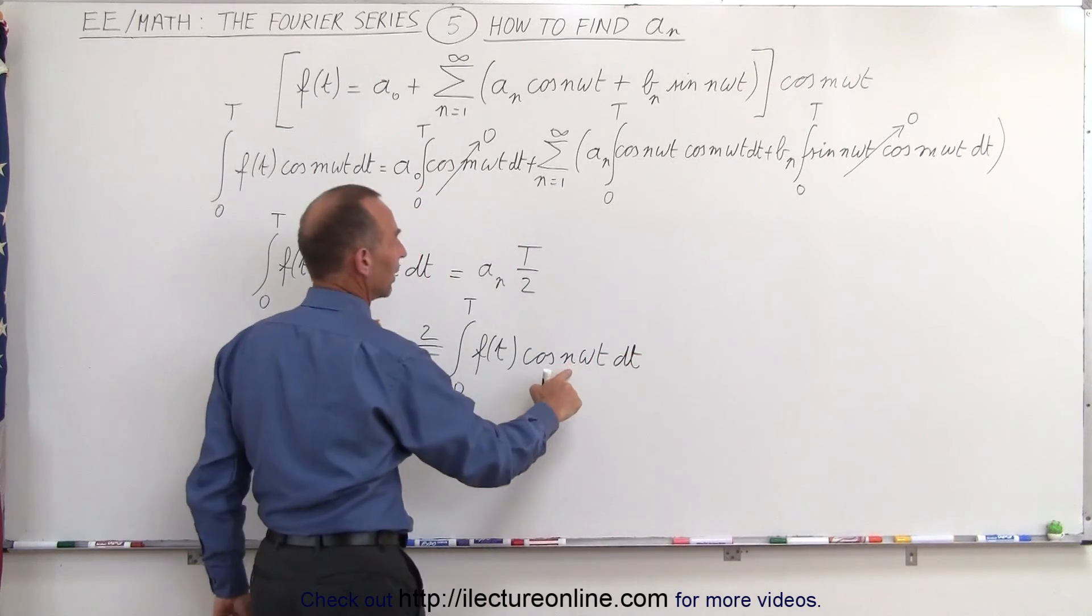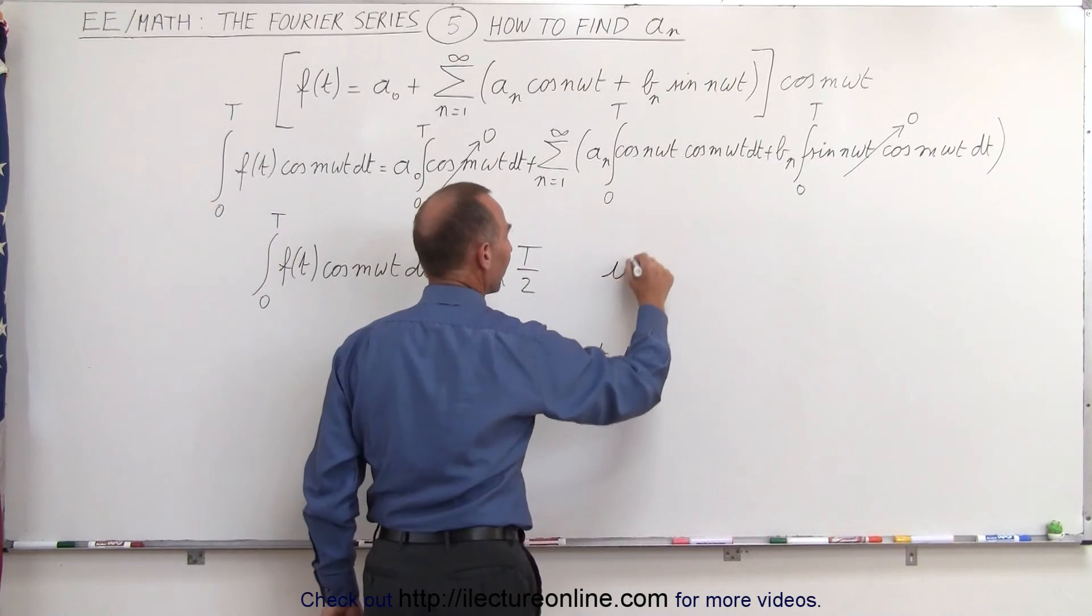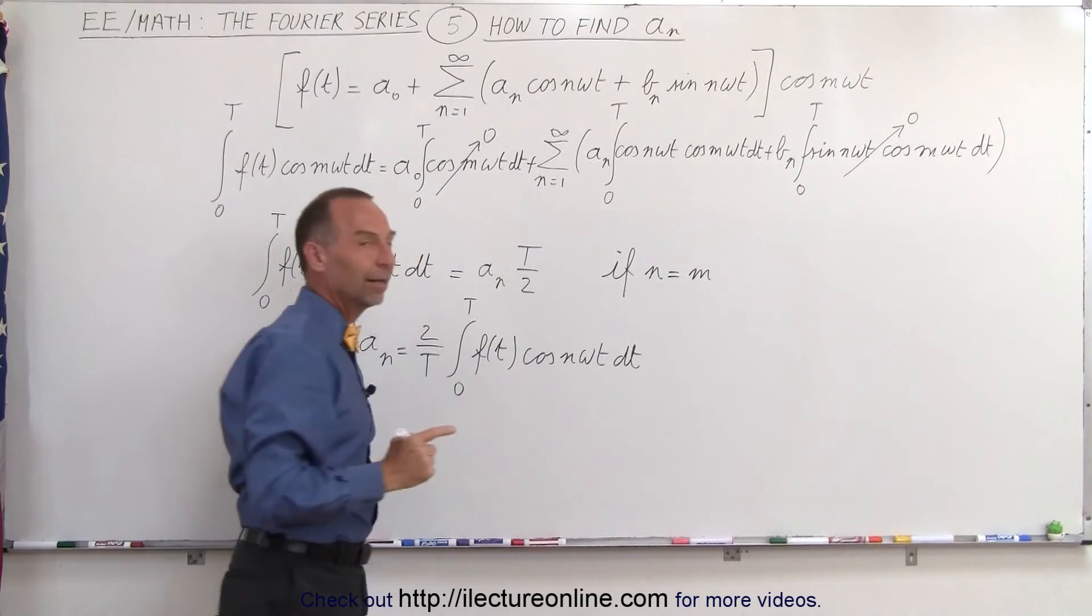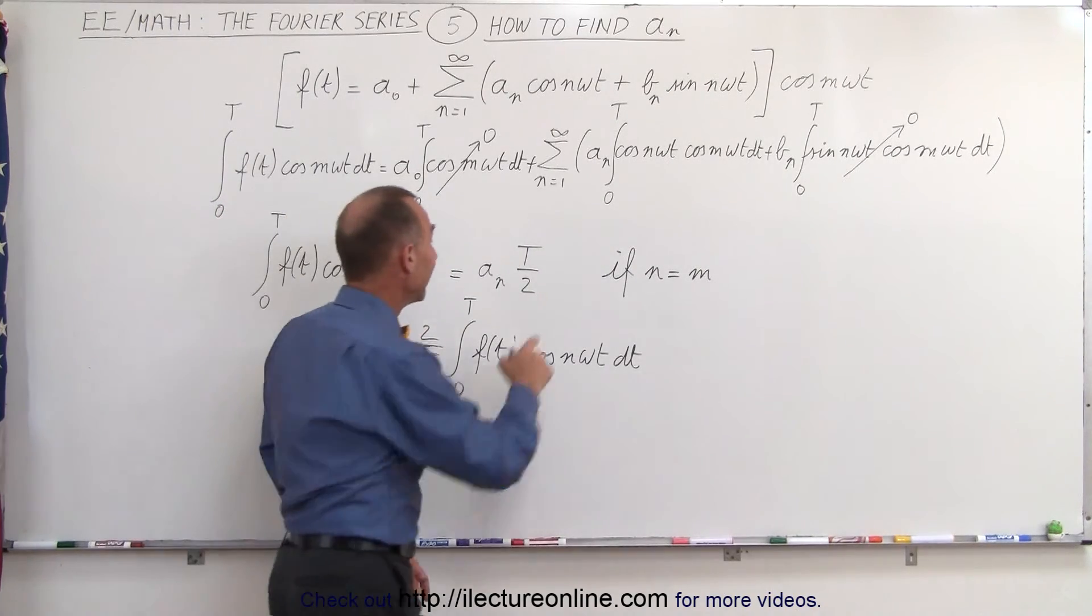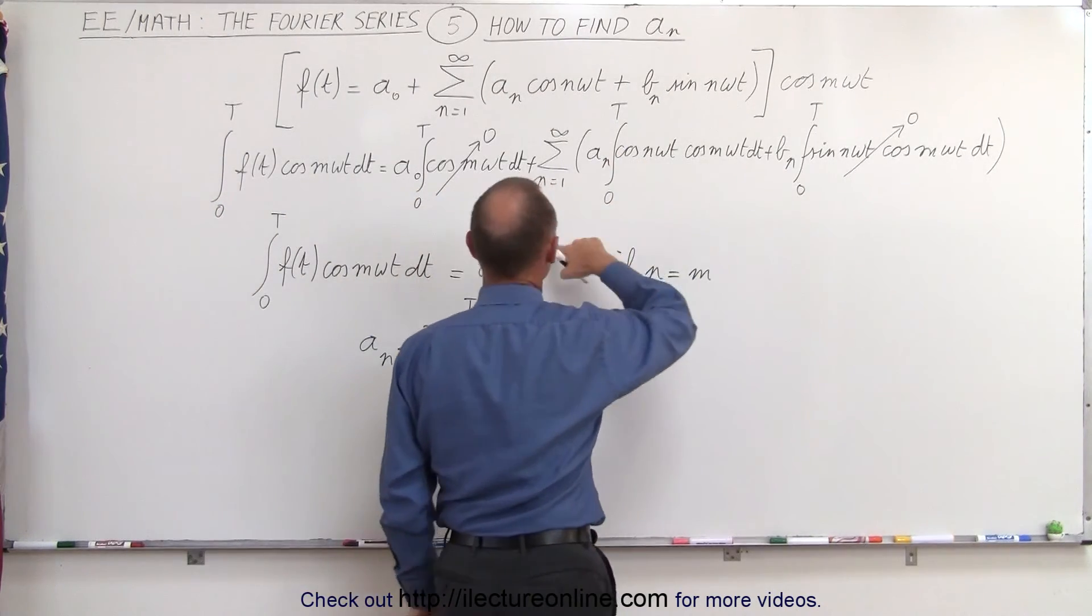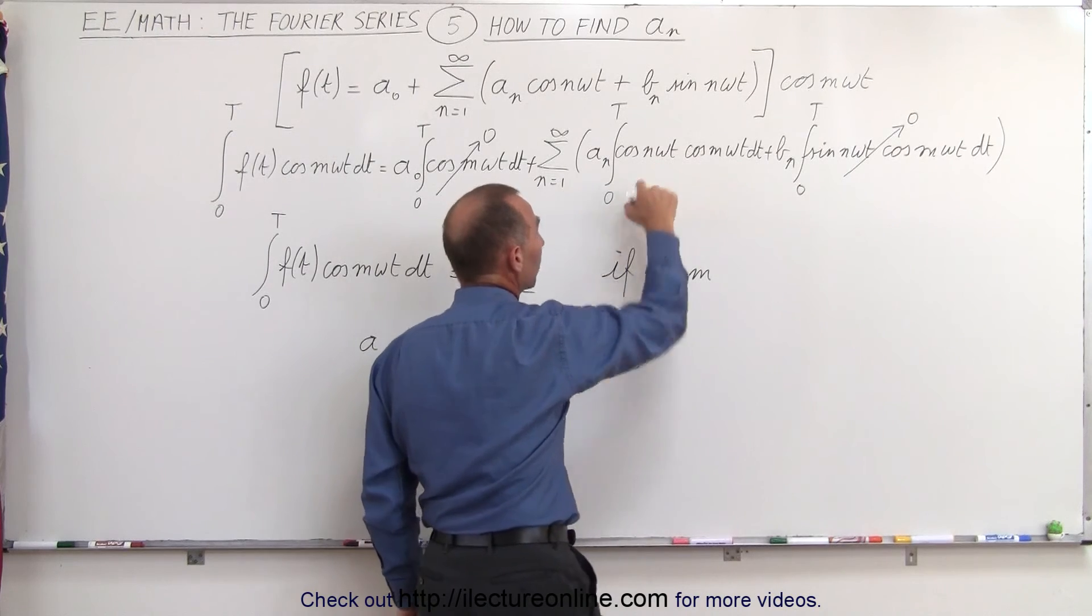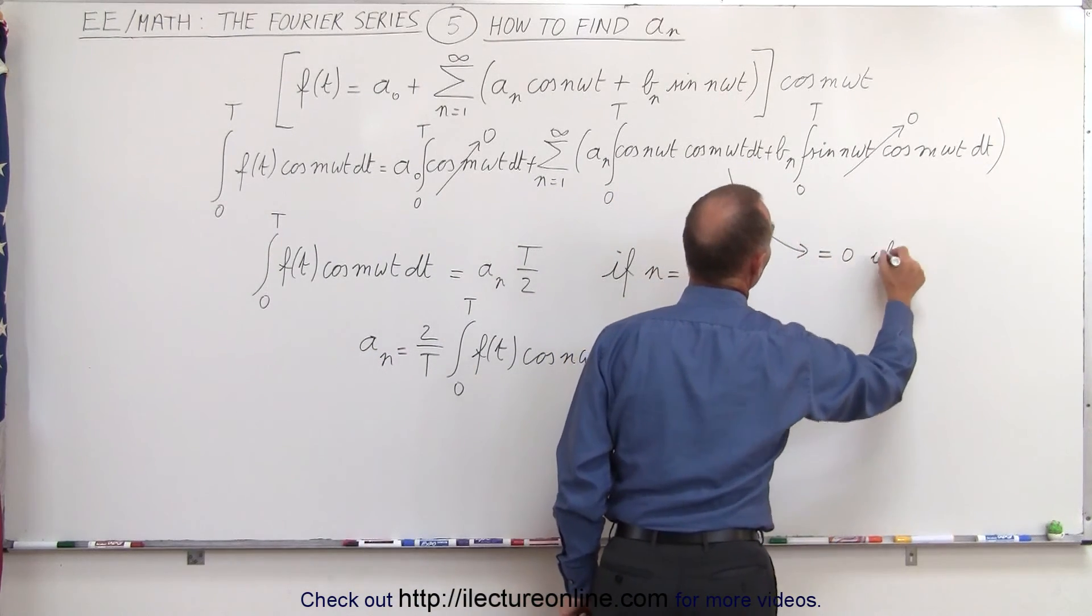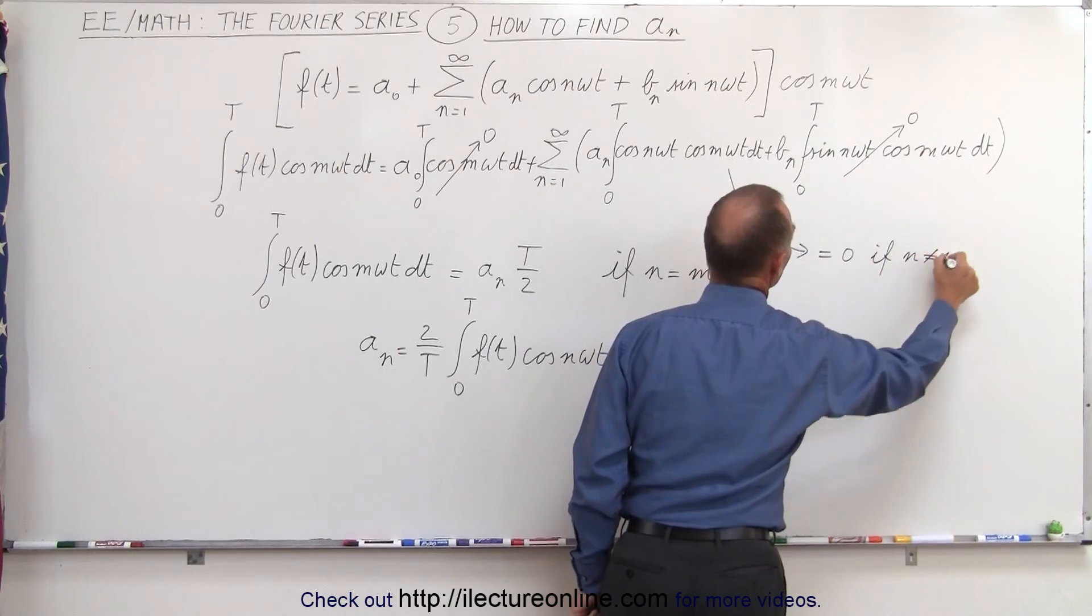times the cosine of n omega t dt. Now, why did I change that to an n? Because this is only true if n is equal to m. If n is not equal to m, then this integral will not equal t over 2, then this integral will equal 0. So this integral right here will equal 0 if n is not equal to m.